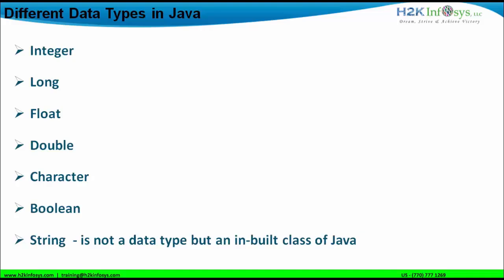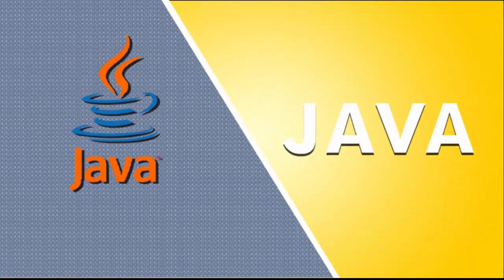Coming back to one particular scenario: if a person declares variable A as an integer data type, that variable A can only hold integer type of data. It cannot hold data of long type, float type, double type, character type, or boolean type. Similarly, if I define variable B as a boolean data type, it can only hold data which is boolean in nature — you cannot put character, double, float, long, or integer data into it. That's not acceptable by the Java compiler.